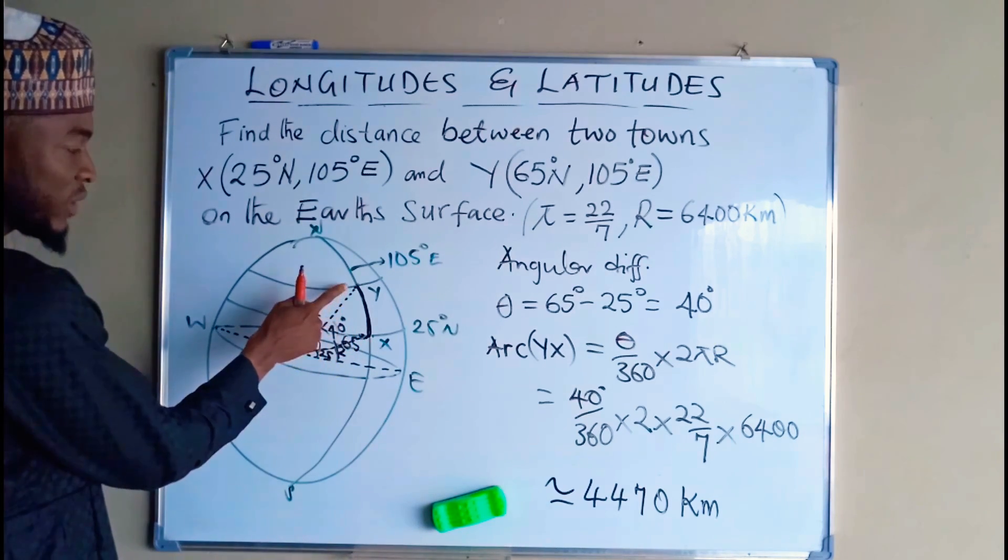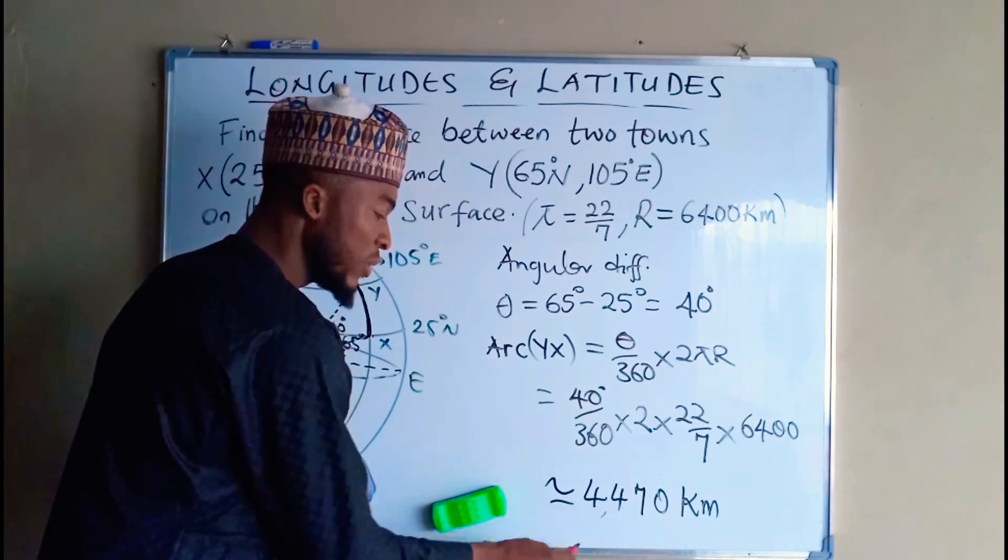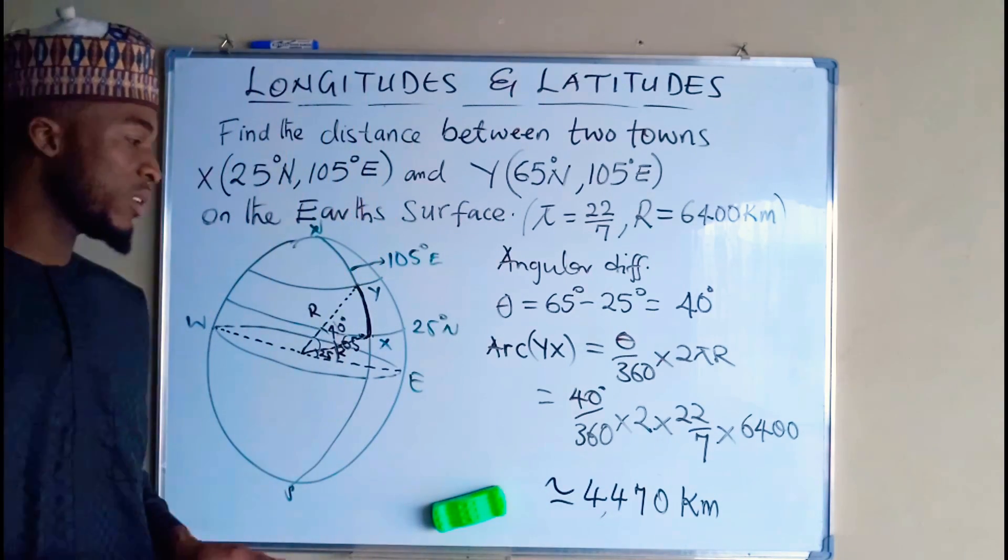The distance between town Y to town X is approximately equal to 4470 kilometers.